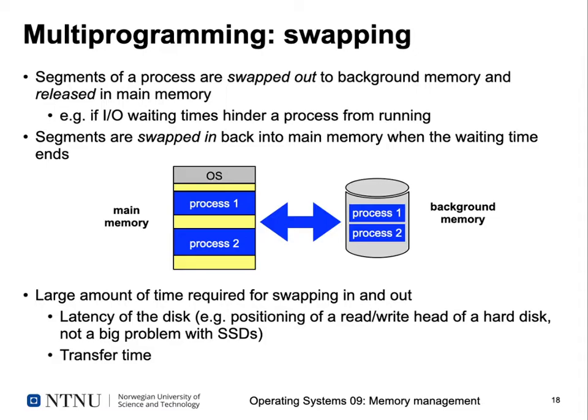Swapping has a significant disadvantage: a large amount of time is required because it is also an I/O operation. This is especially critical for traditional hard disks with rotating platters, where you have to wait for the read/write head to move to the right track and for the sector to arrive under the head due to disk rotation. With a modern SSD this is less problematic, but you still have latency and significant transfer time.